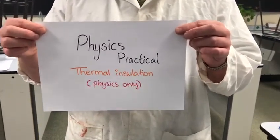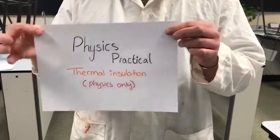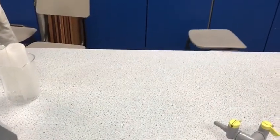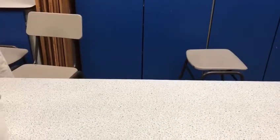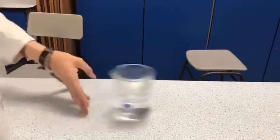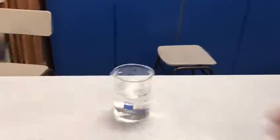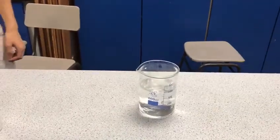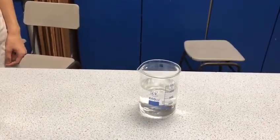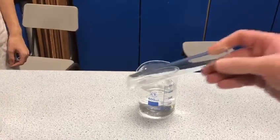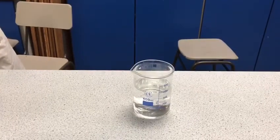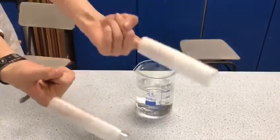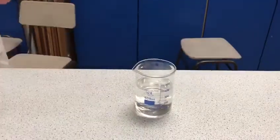For AQA physics it's only on the physics course, not the combined science. We will need a thermometer and a beaker of hot water. We will also need different boiling tubes wrapped in different materials: a boiling tube with nothing on for our control, with foam insulation, different types of layers — one layer and two layers — and other materials such as paper.